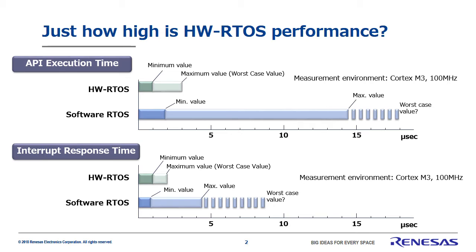This value here represents the theoretical maximum or worst case value possible for the hardware real-time OS. So you can see from comparing hardware real-time OS and software real-time OS that not only are API execution and interrupt response times faster with hardware RTOS, but it has the added benefit of predictable maximum times. Clearly, the difference between the minimum and maximum times in a hardware real-time OS is very small for both API execution time and interrupt response time, which is a very important feature.